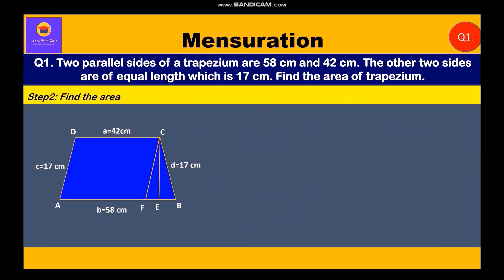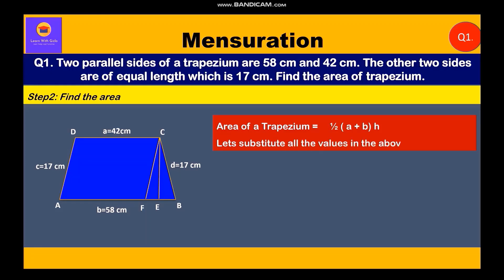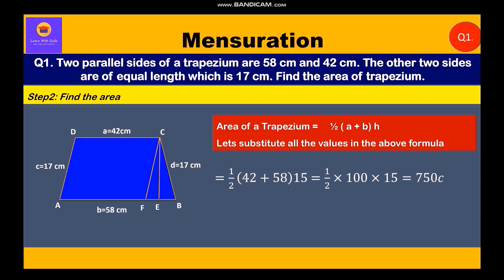Now we find the area of the trapezium. Area of trapezium = ½ × (a + b) × h. Substituting: ½ × (42 + 58) × 15 = ½ × 100 × 15 = 750 cm². Therefore the area of the trapezium is 750 cm².